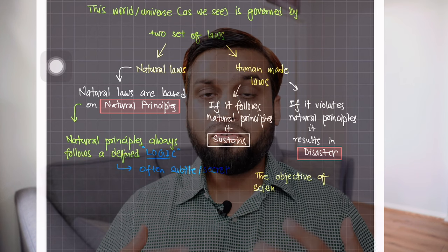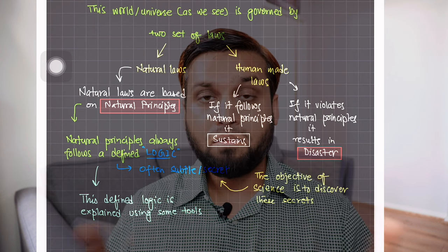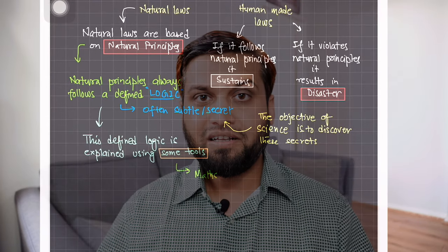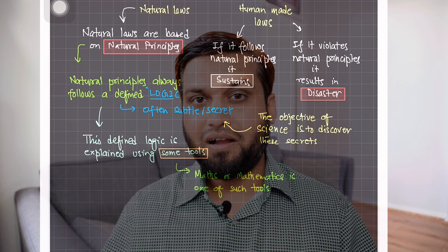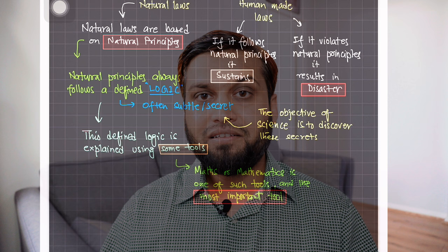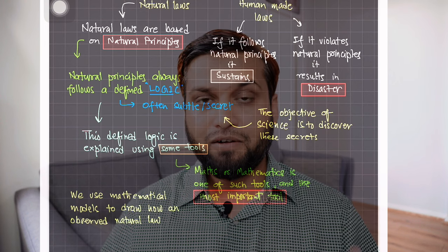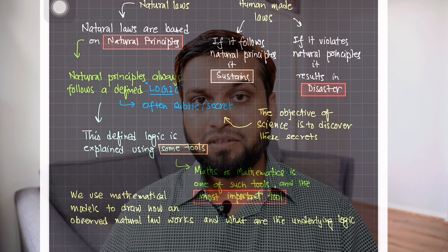Natural laws follow natural principles, and those principles follow certain underlying logic. How do we come to know this logic? How can we best understand it? There are tools to understand the underlying logic that governs a principle — principles that are experienced by human beings and called natural laws. One of those tools is mathematics. Mathematics gives human beings the ability to draw concepts and form mental pictures to understand the underlying logic.